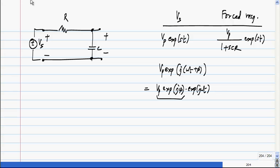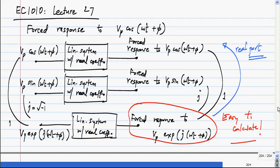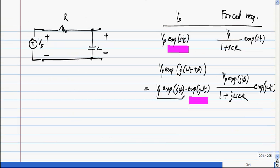What is the response now? Vp e^(jφ) / (1 + jωCR) e^(jωt). Or I could put these two things together anyway, which is also Vp e^(j(ωt + φ)), which is the original exponential divided by